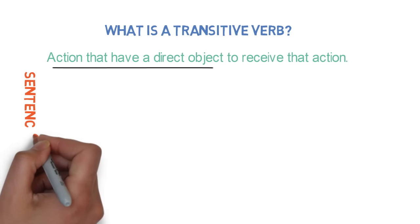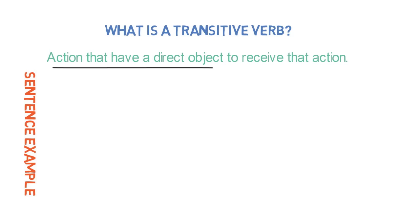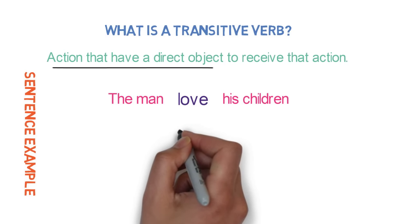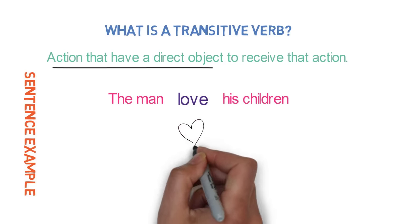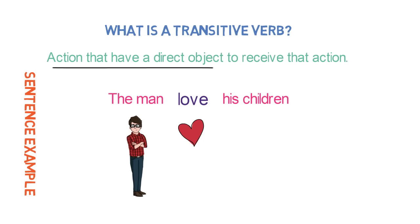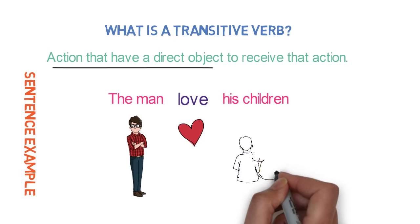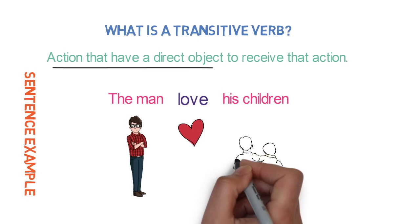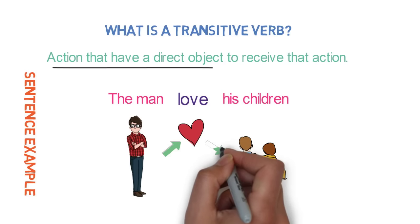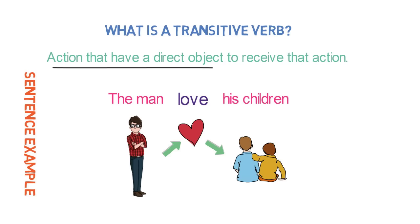Let's look into a sentence example to make things clear: The man loves his children. Here, 'loves' is the action performed by the man, who is the subject in this case, and it has a receiver — children — which is the direct object. So 'loves' is a transitive verb.